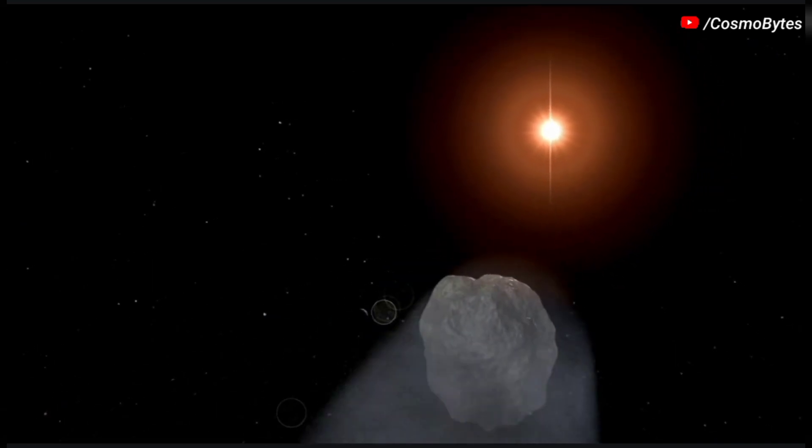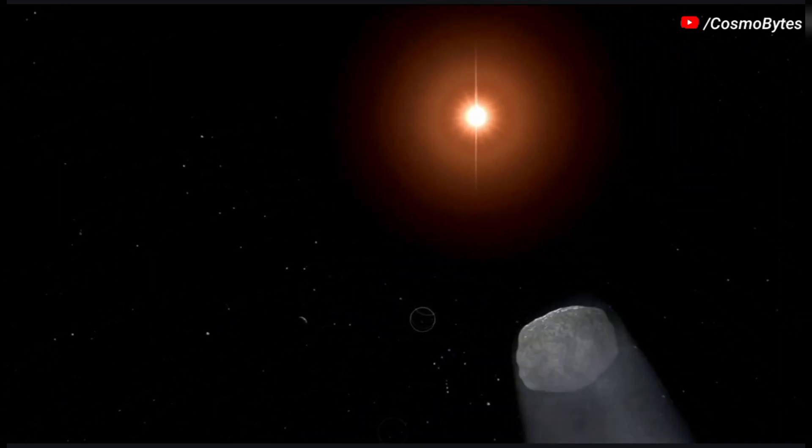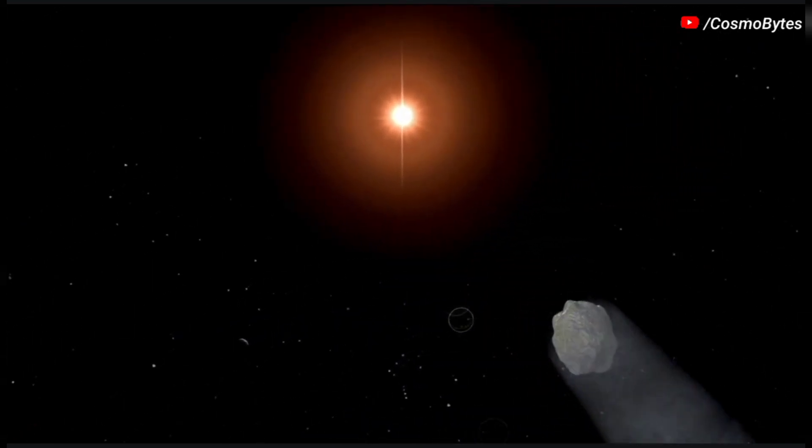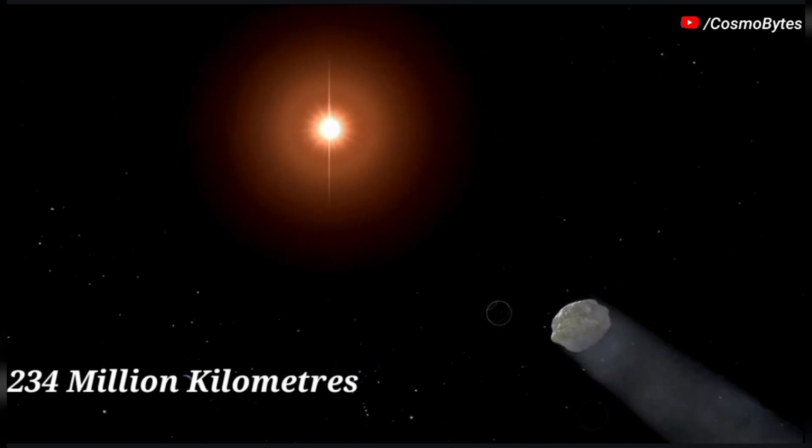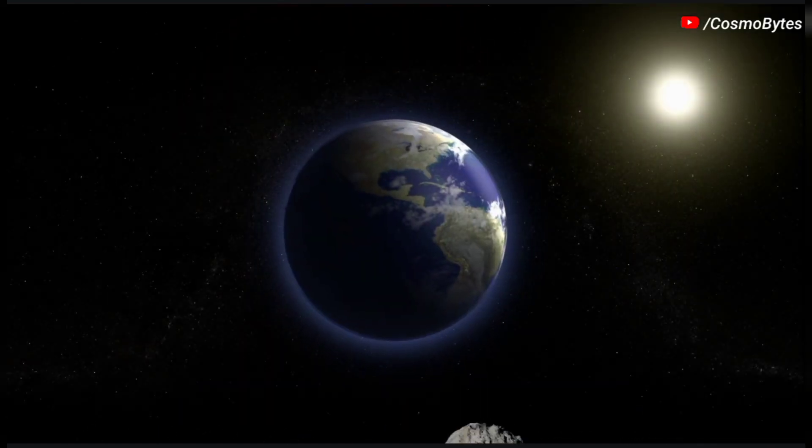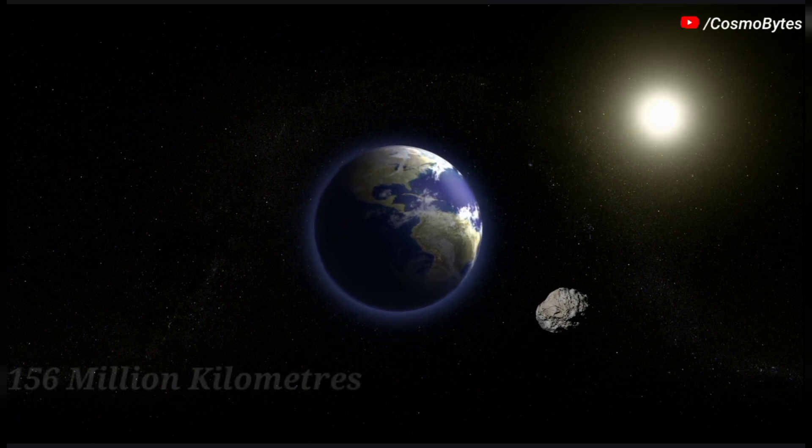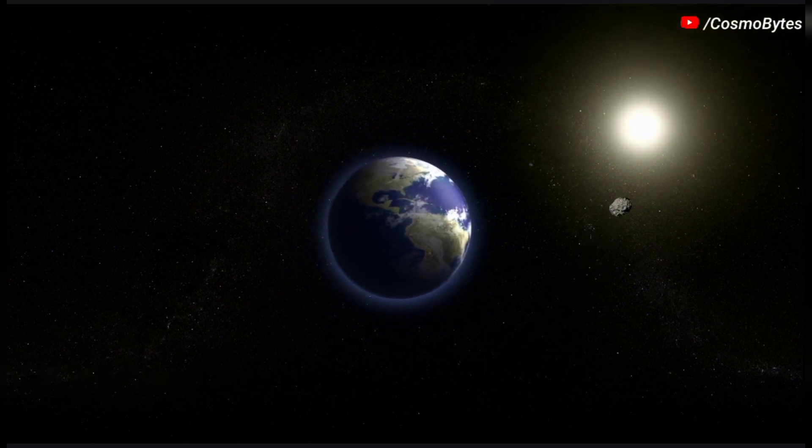The aphelion, farthest point from the Sun, of the asteroid 2022 QP3 orbit is 234 million kilometers, and the perihelion, nearest point to the Sun, is 156 million kilometers.